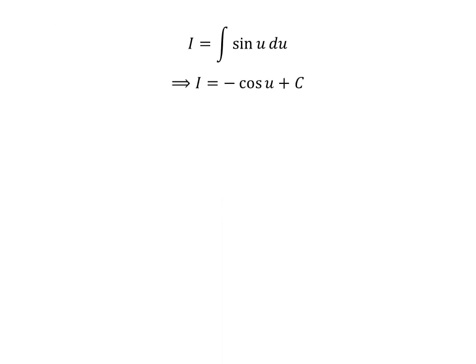We know negative cosine of u is the anti-derivative of sine of u. So, I equals negative cos(u) plus C. C is the arbitrary constant of indefinite integral. Never forget to add this constant.